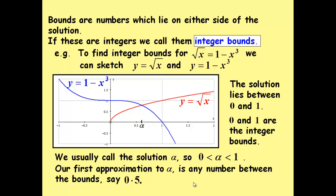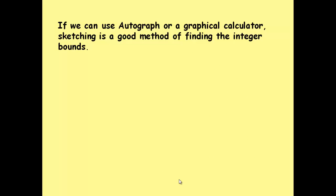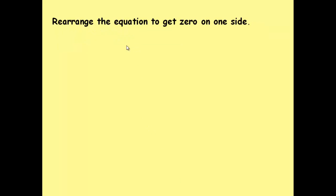For our first approximation we just pick any number between 0 and 1. Say 0.5 is a sensible estimate. So, this is an algebraic method.